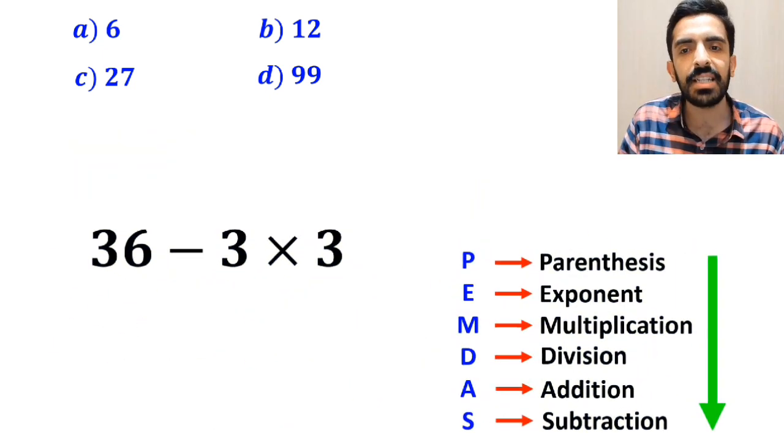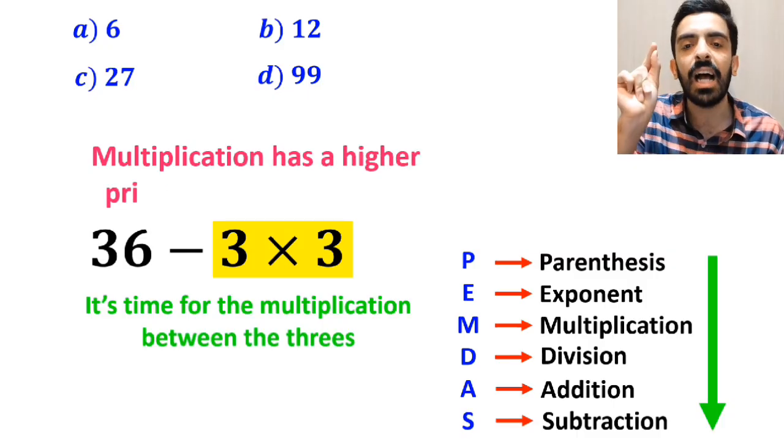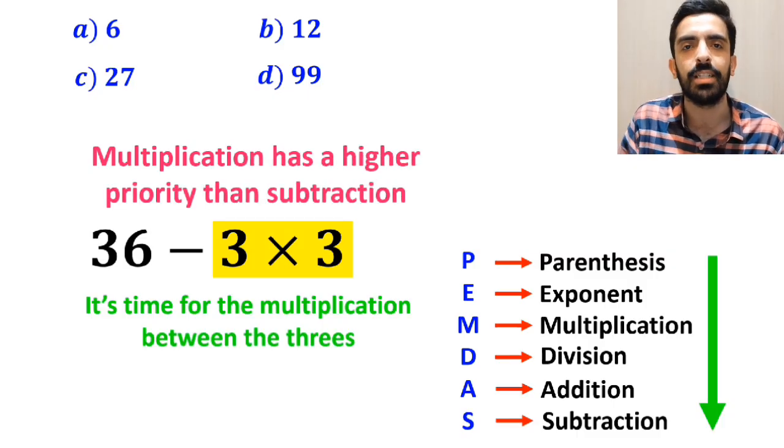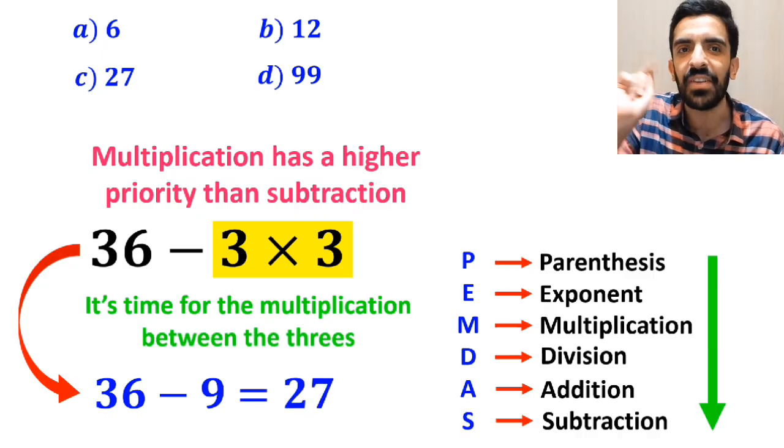And the final step, it's time for the multiplication between the 3s, because multiplication has a higher priority than subtraction. So, we'll write this expression as 36 minus 9, which ultimately gives us the answer 27.